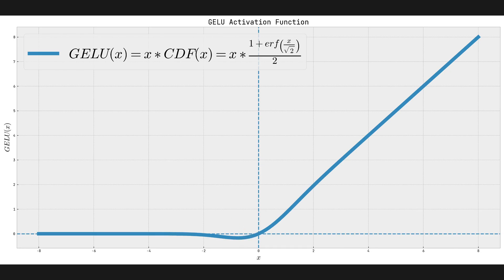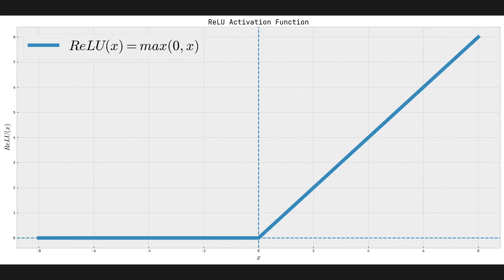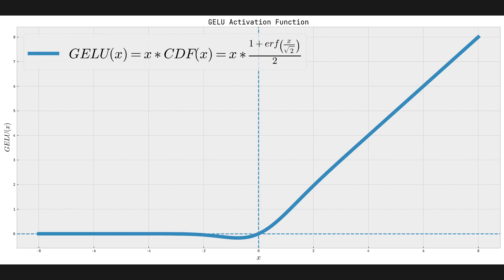In GELU, negative inputs are not all mapped to zero — especially for x in the interval (−1, 0). That interval is kind of important because probabilities usually range from zero to one, and if you multiply by minus one you get the interval (−1, 0). Allowing a neuron to map unique inputs in the (−1, 0) interval to unique outputs is one of the key strengths of GELU over ReLU, where all negative numbers are mapped to zero.